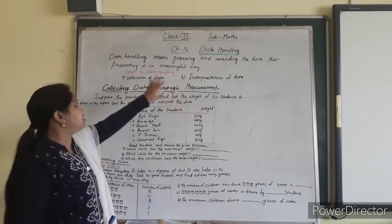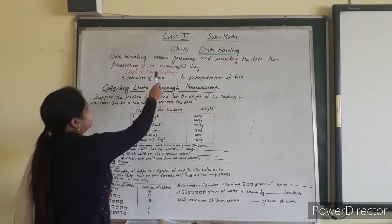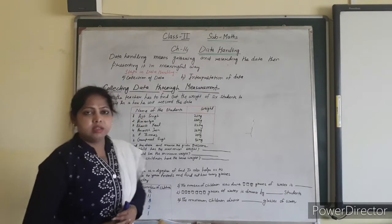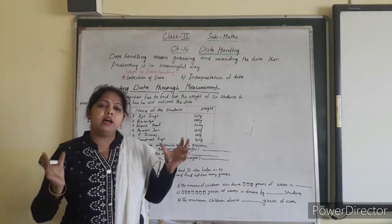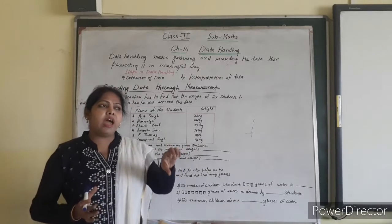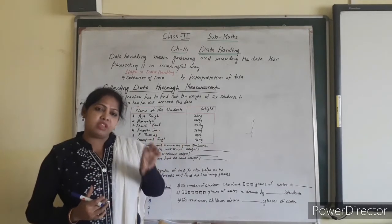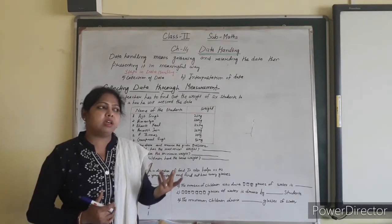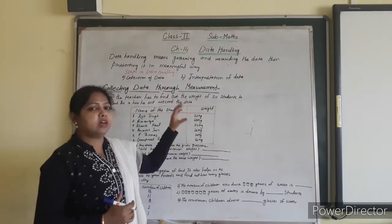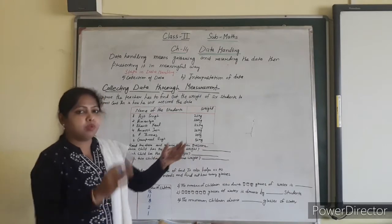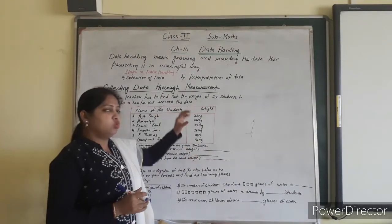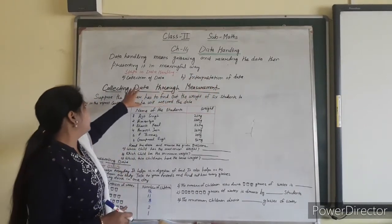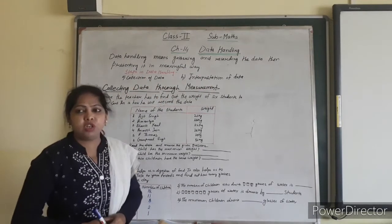As I explained in my previous class, data handling means gathering and recording the data and presenting it in a meaningful way. If you have to collect the data of students' ages, you first need to know the age, then make a record of it and represent it meaningfully. That is called data handling. In data handling, there are two steps: the collection of data and the interpretation of data.